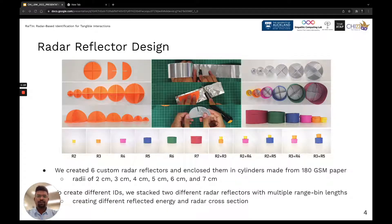Radar reflectors are conventional corner reflectors, those that tend to reflect majority of incident waves back towards the emitter. We designed our custom radar reflectors based on traditional passive octahedral radar reflectors. In RaITIn, we created six custom radar reflectors with radii of 2 to 7 cm and enclosed with cylinders made from 180 GSM craft paper.